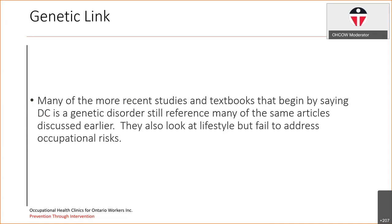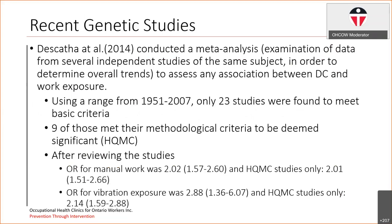Many of the more recent studies and textbooks that begin by stating Dupuytren's is a genetic disorder still reference many of the same articles by McFarlane and Ling, and while they do look at some lifestyle factors, they once again fail to address the occupational risks. Some more recent genetic studies, such as Descartha in 2014, examined data from several independent studies of the same subject to determine trends and assess associations. By reviewing studies from 1951 to 2007, they found only 23 met their basic criteria to be deemed a decent study, and upon further review, only nine of those met qualification to be deemed a high-quality review.